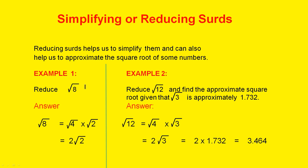Example 1: Reduce the square root of 8. The square root of 8 can be written as the square root of 4 times the square root of 2. We know that the square root of 4 is 2, so the square root of 8 is 2 times the square root of 2.